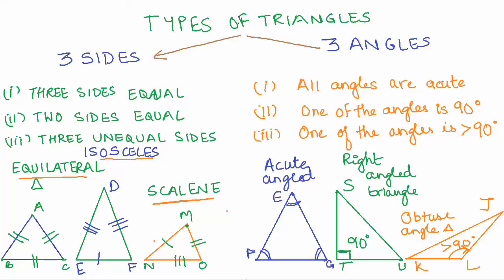To summarize: depending on sides, if all three sides are equal it is an equilateral triangle; if two sides are equal it is an isosceles triangle; if all three sides are unequal it is a scalene triangle. Based on angles: if all three angles are acute it is an acute angled triangle; a right angled triangle has one right angle of 90 degrees; and an obtuse angled triangle has one angle that is obtuse or greater than 90 degrees. In the coming videos, we will study more details and characteristics about these different types of triangles.